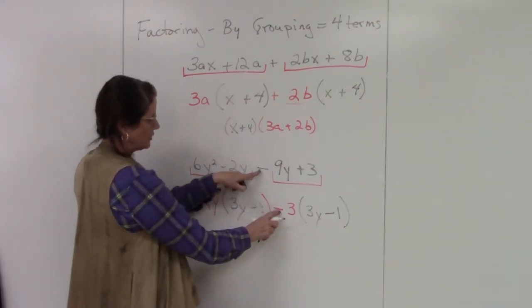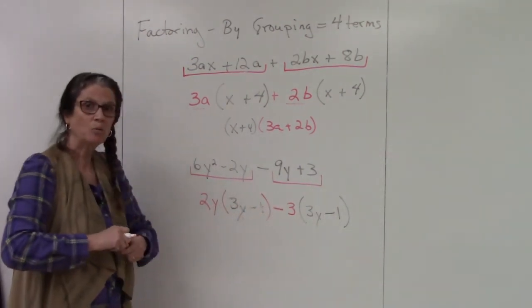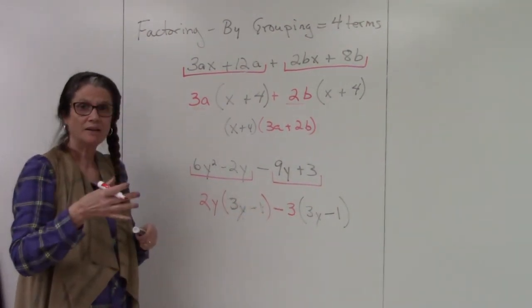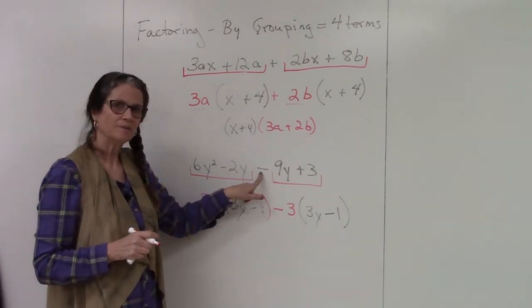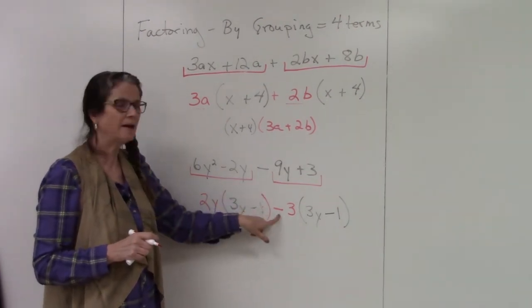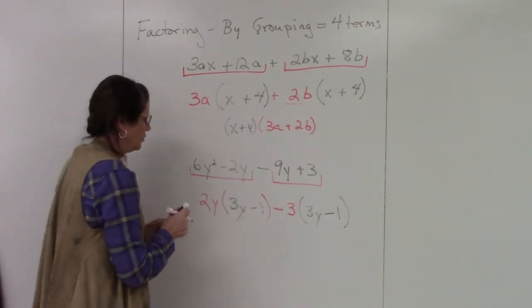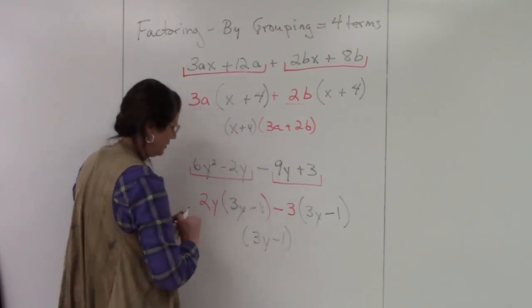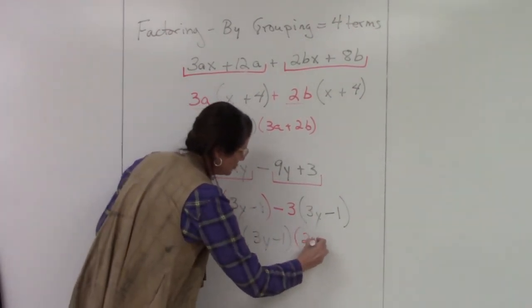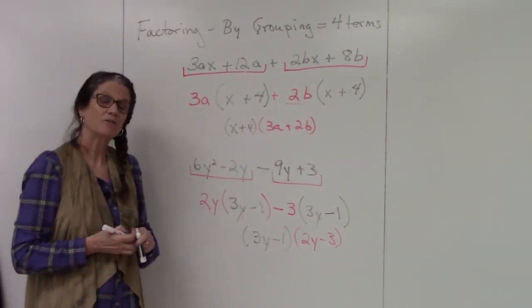So if you ever have a sign issue, come back to here—it's because you're using a minus here. These should always end up being the same thing. So factor again. I have 3y minus 1. What's left? 2y minus 3 goes in the other set of parentheses. And that's factoring by grouping.